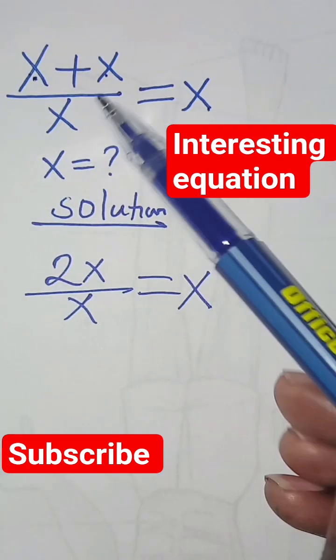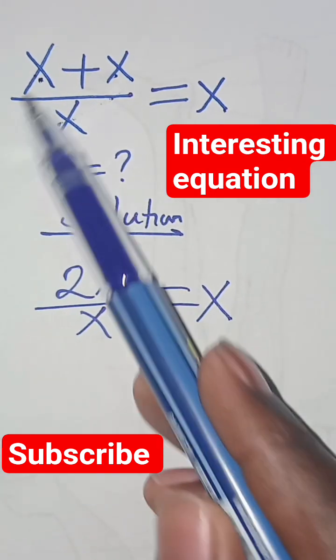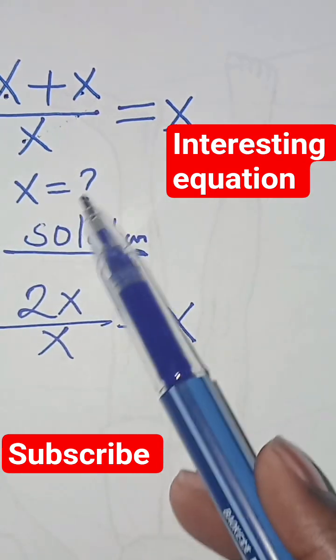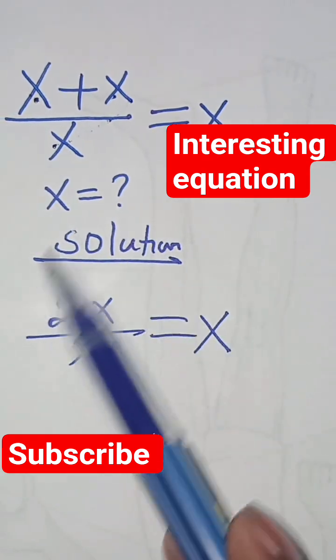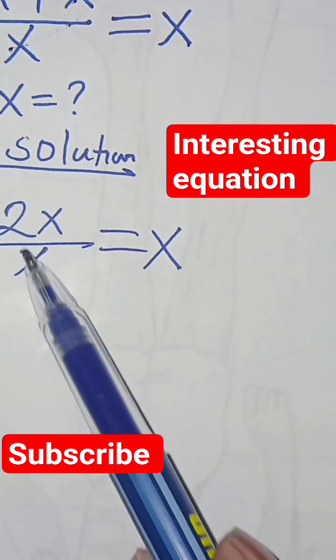How to solve for the value of x given this math problem which is x plus x divided by x. What are the values of x? We have two methods to solve this.